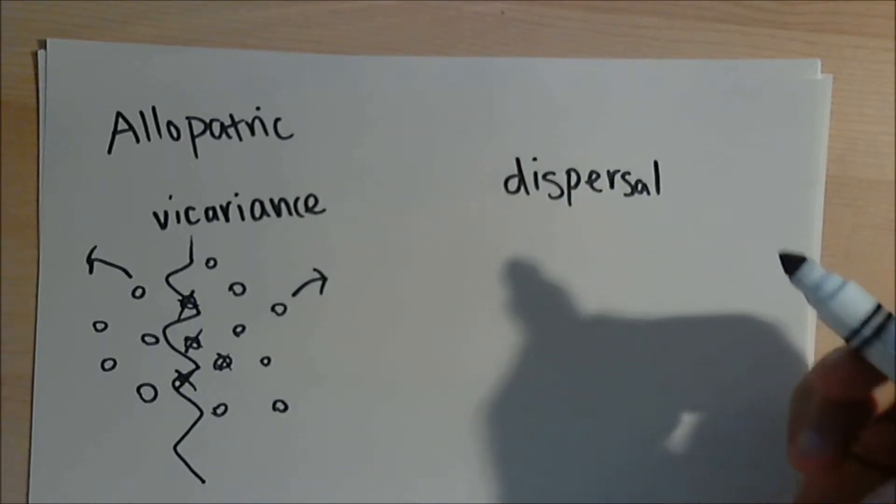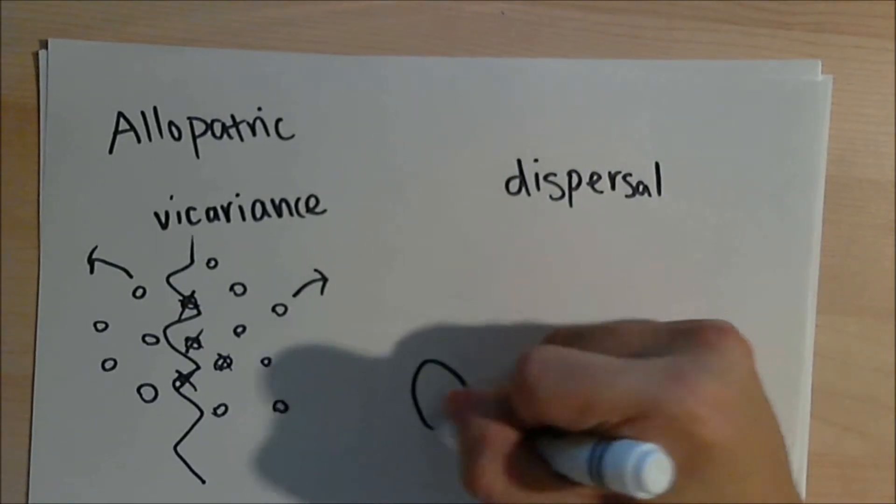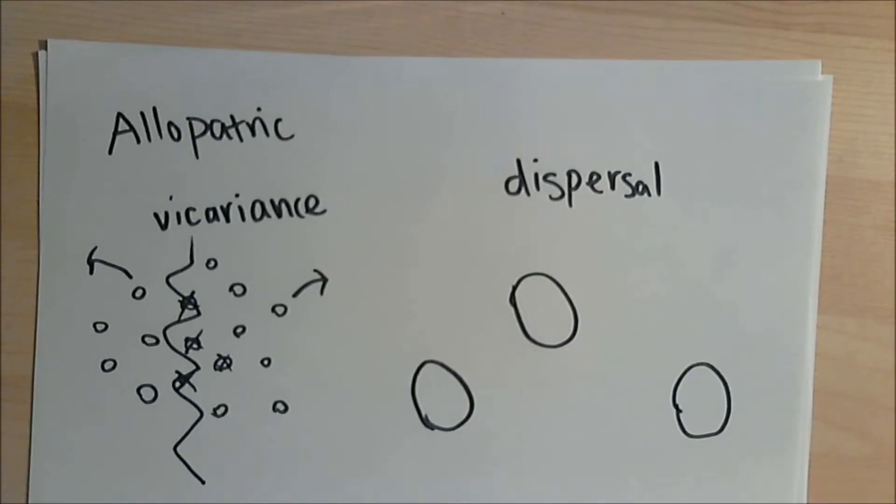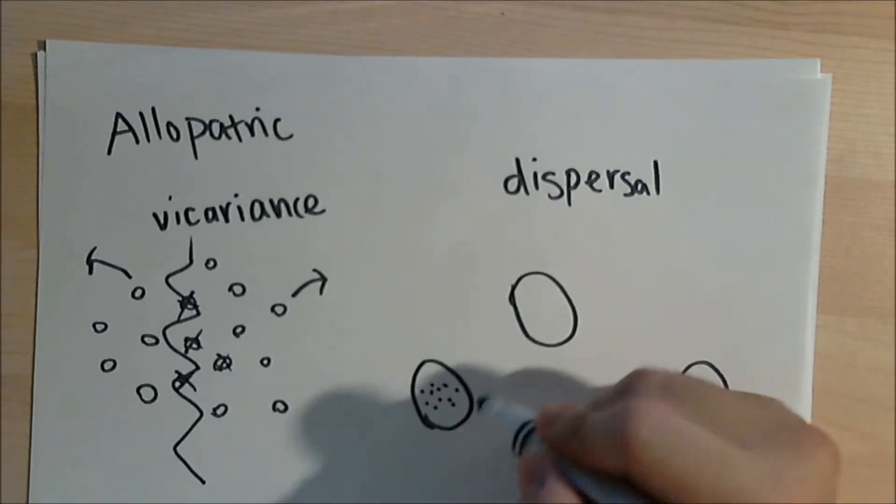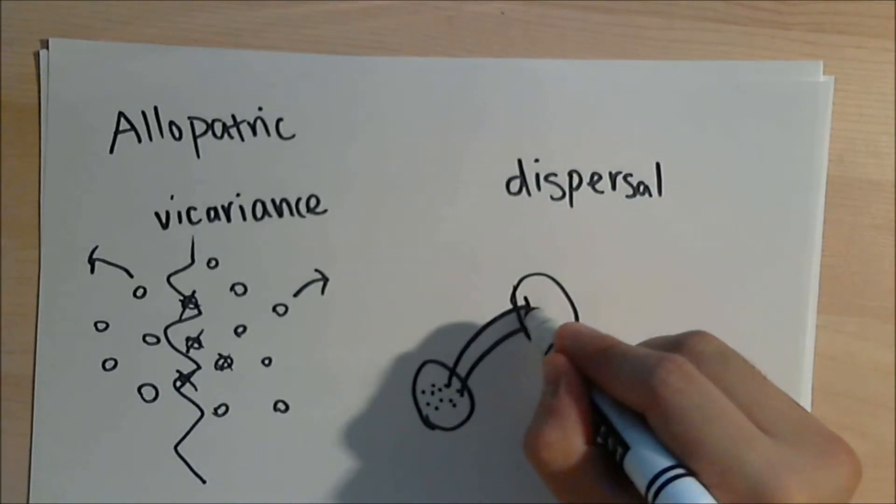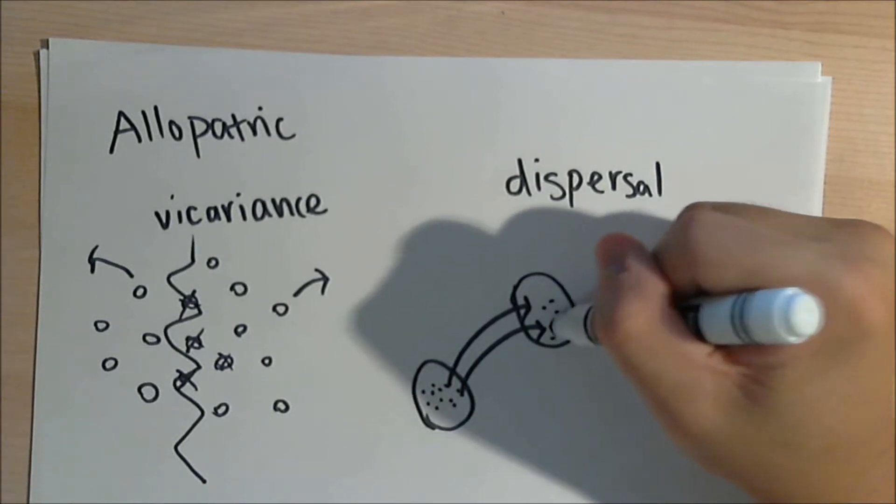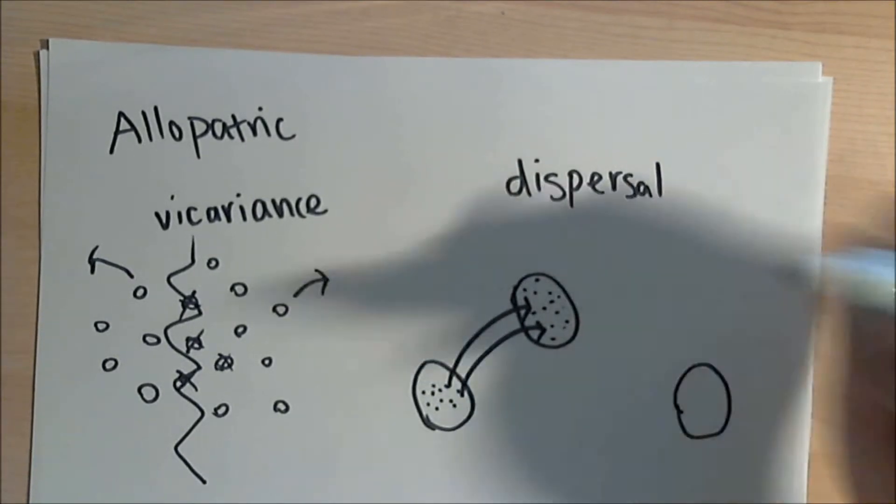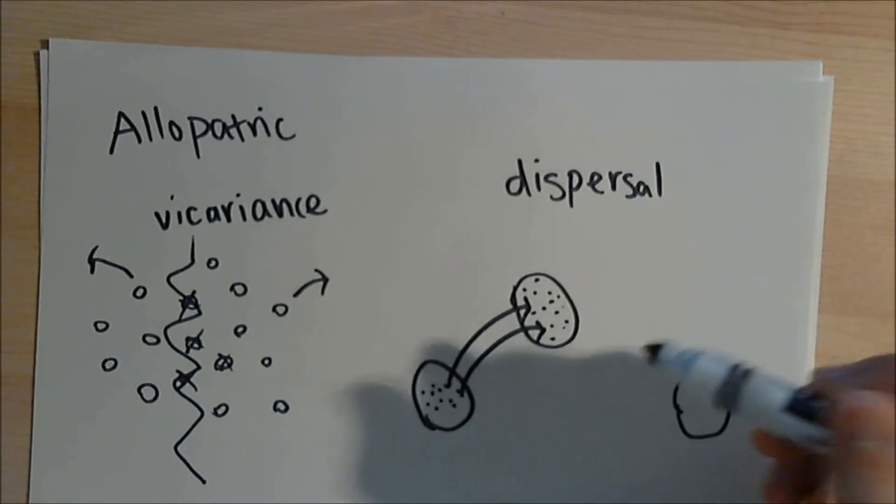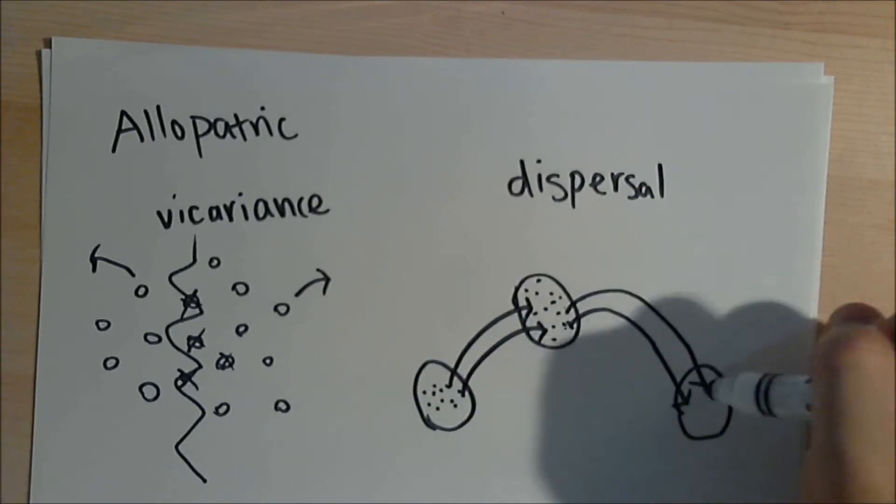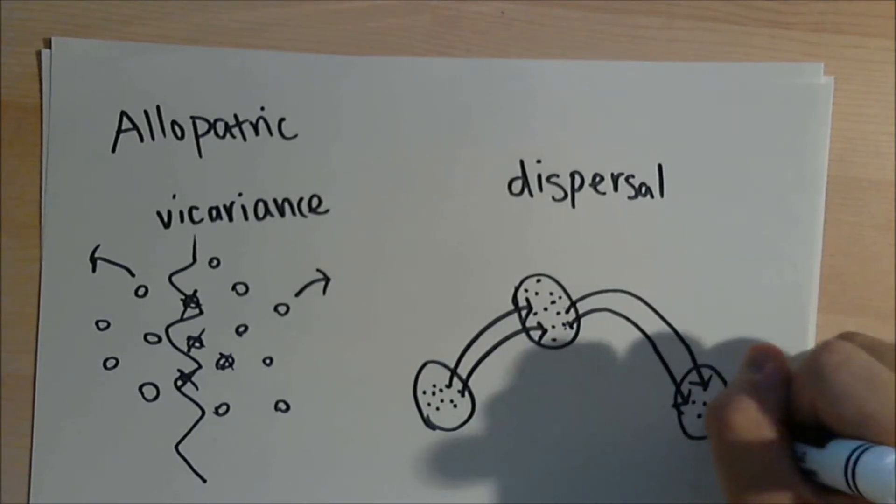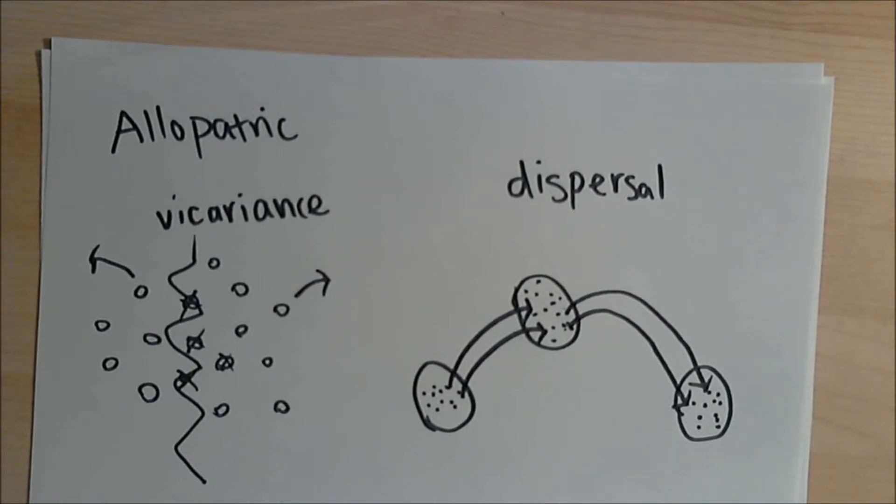An example of dispersal speciation would be Hawaiian fruit flies. Let's say these are some islands in Hawaii and there were fruit flies here. Let's say they migrated to this island right here. They would eventually speciate right over here, become something new, and there would be no more gene flow between them. After that, these flies went to this island and they would speciate over here. So that is allopatric speciation. Let's talk about sympatric speciation now.